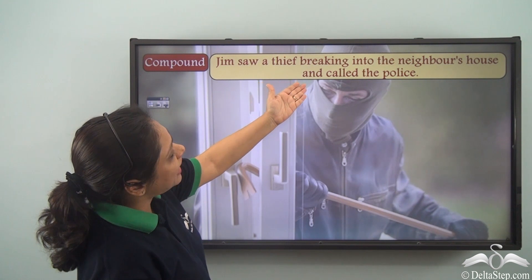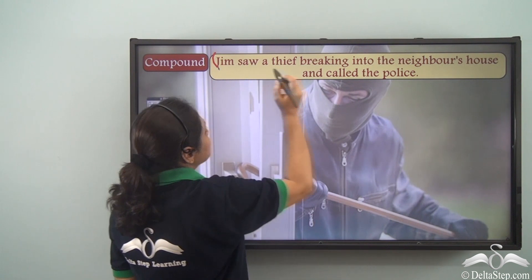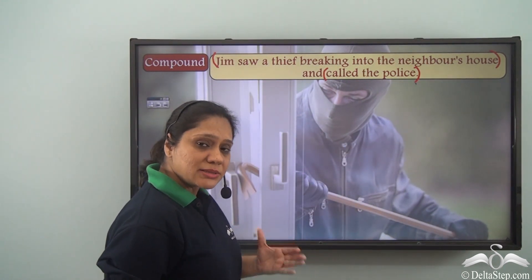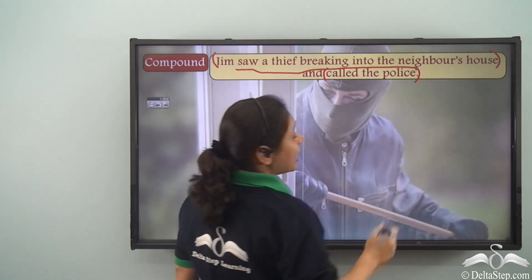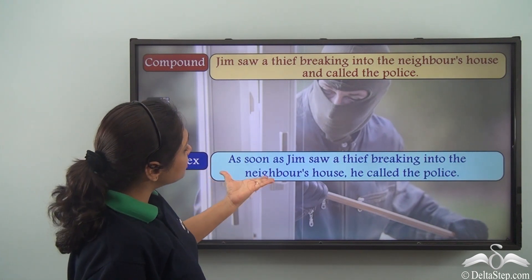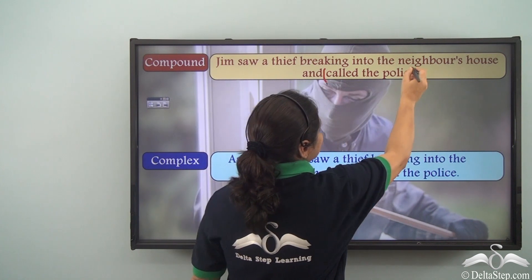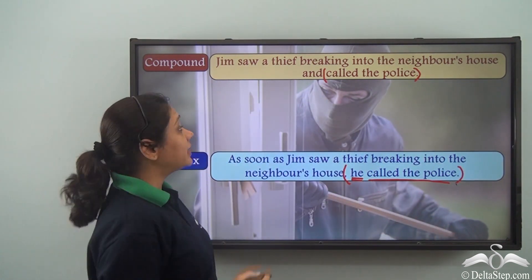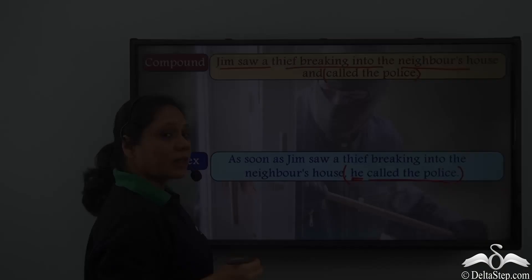'Jim saw a thief breaking into the neighbour's house and called the police' — meaning Jim called the police. The clauses again show a succession of events: one happened first, then immediately the other. As a complex sentence: 'As soon as Jim saw a thief breaking into the neighbour's house, he called the police.' The main clause 'he called the police' keeps its subject explicit, while the other part becomes a subordinate clause using 'as soon as.'